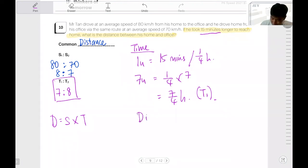Yes, exactly. So, your distance is S1 times T1 equals to 80 km per hour multiplied by 7 over 4 hour. You get 140 km. Yes, good.